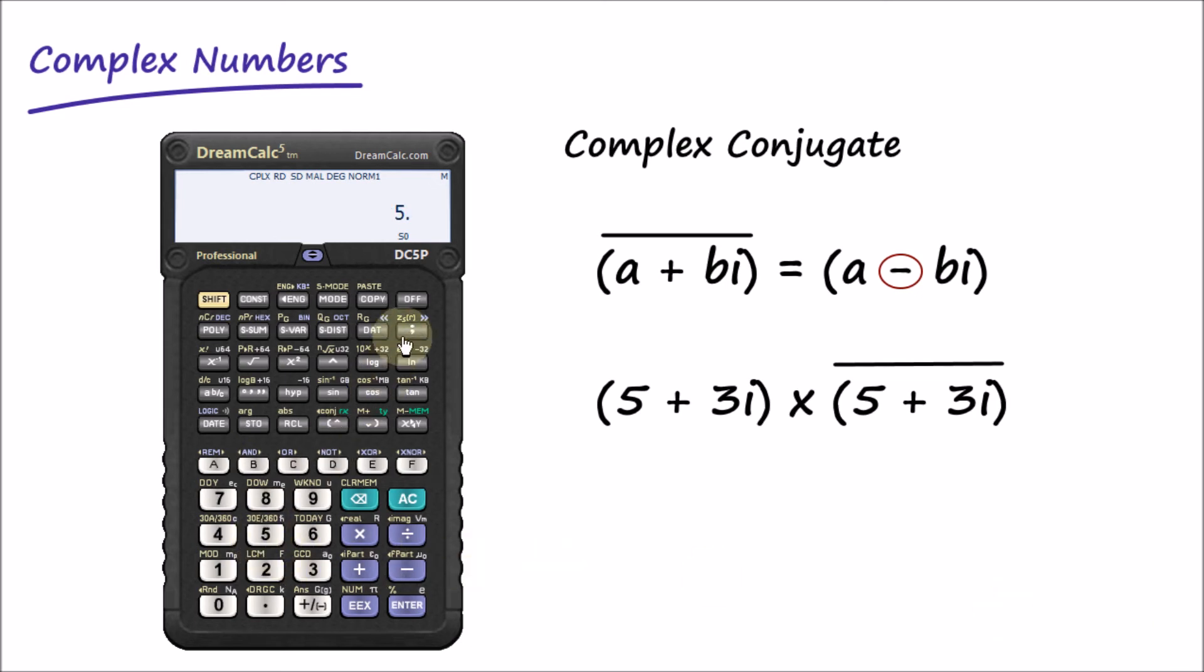5 separator 3 multiplied by. Now, the DreamCalc conjugate function operates in a postfix manner, as indicated by the small left arrow prefixed to the name on the key. This avoids us having to input the number twice, because we can simply use it on the current display value, like so.